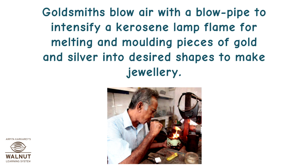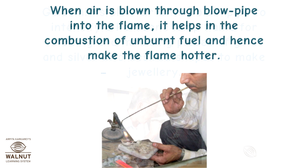Goldsmiths blow air with a blowpipe to intensify a kerosene lamp flame for melting and moulding pieces of gold and silver into desired shapes to make jewellery. When air is blown through the blowpipe into the flame, it helps in the combustion of unburnt fuel and hence makes the flame hotter.